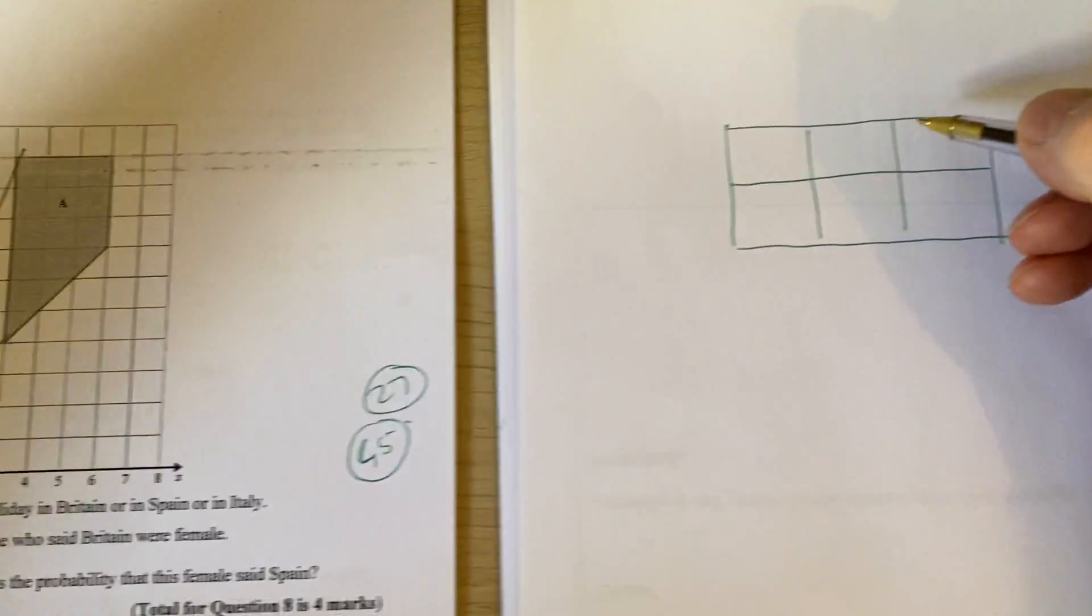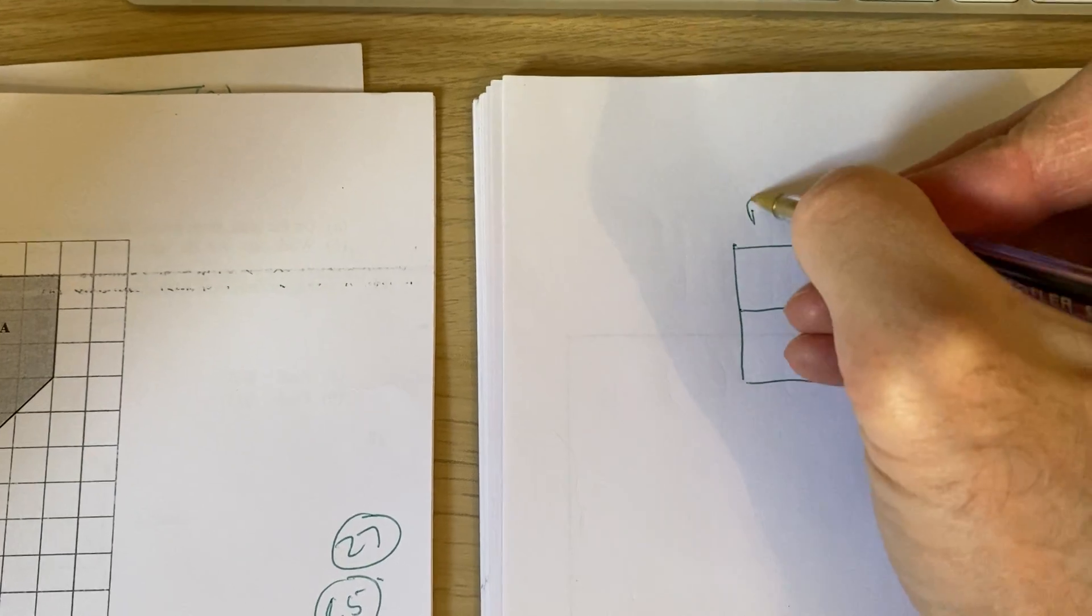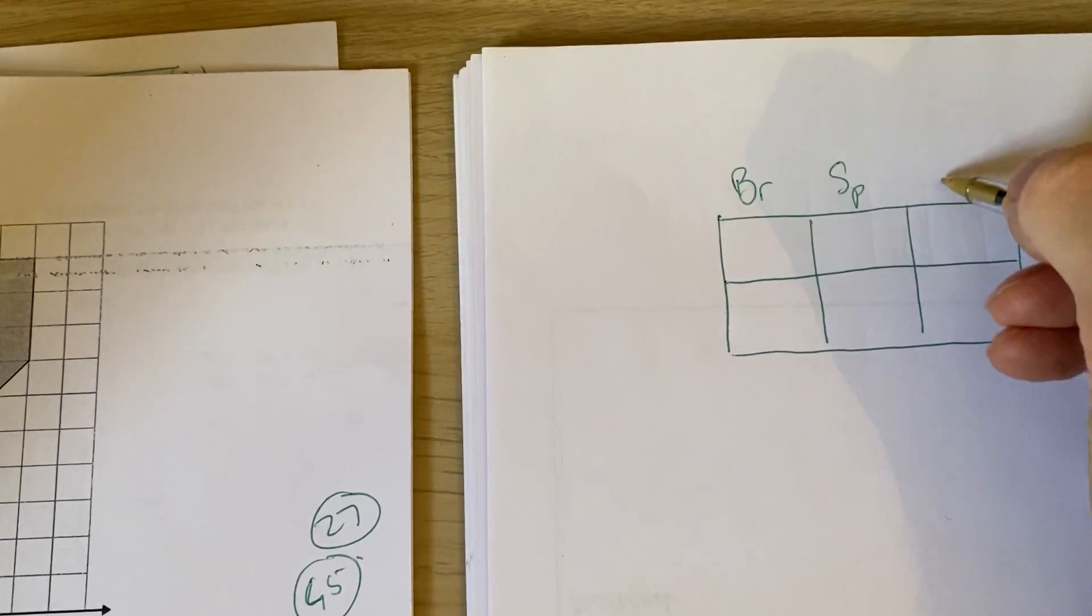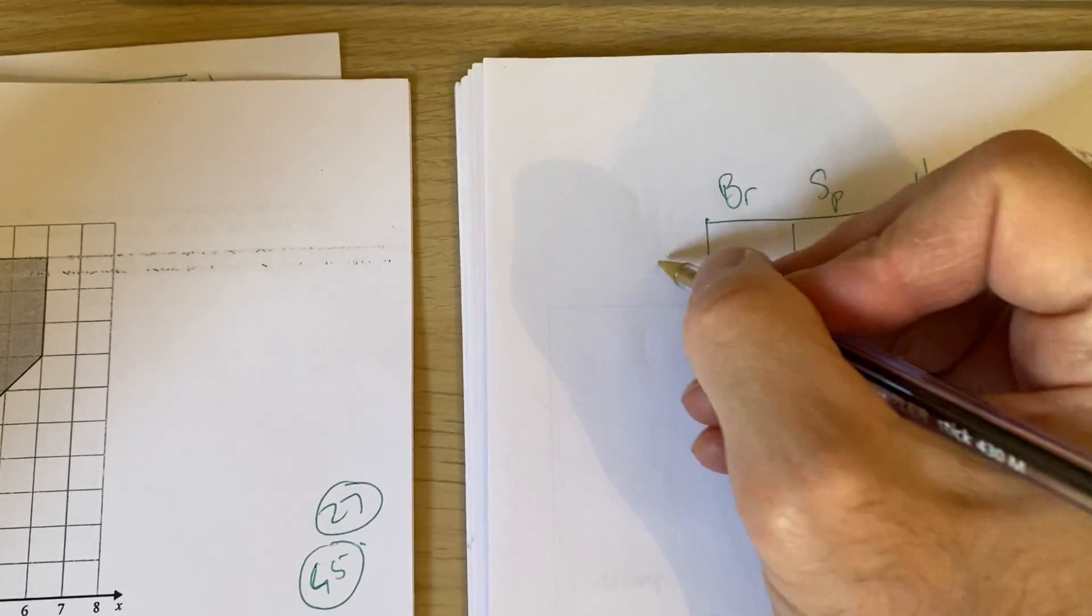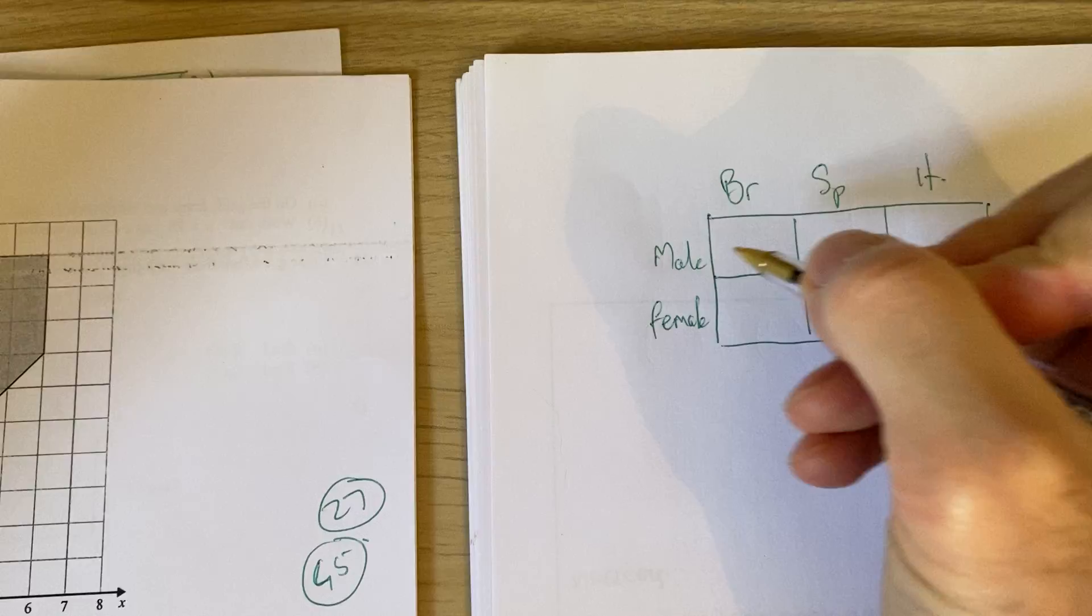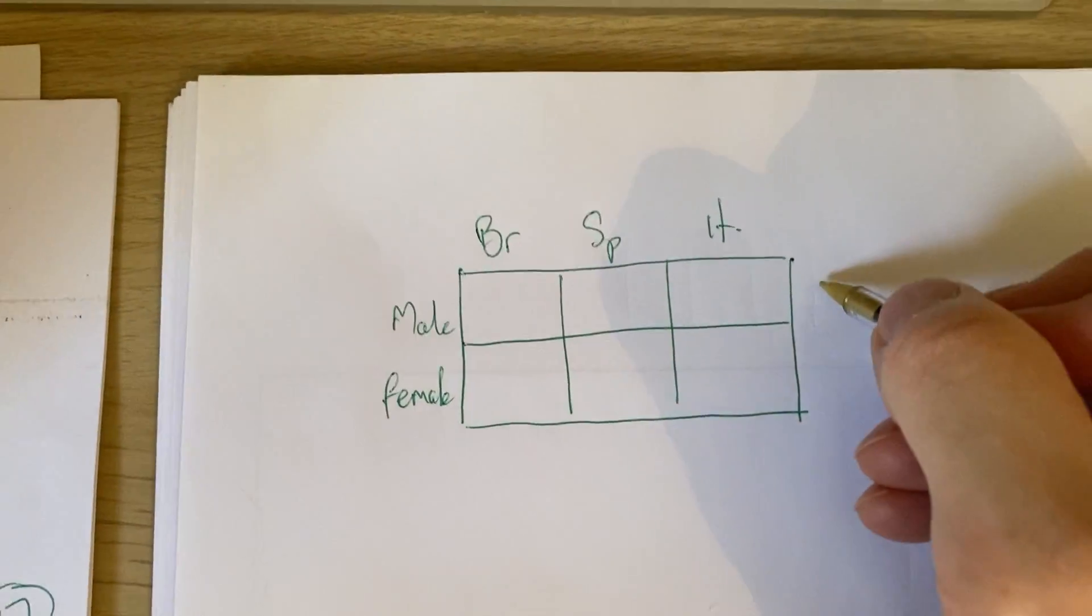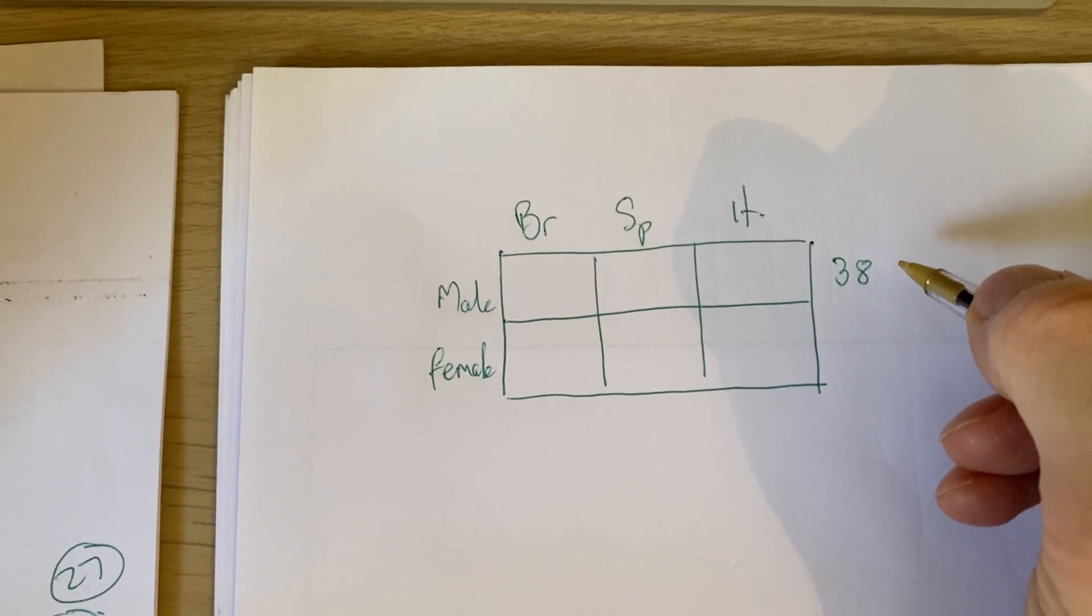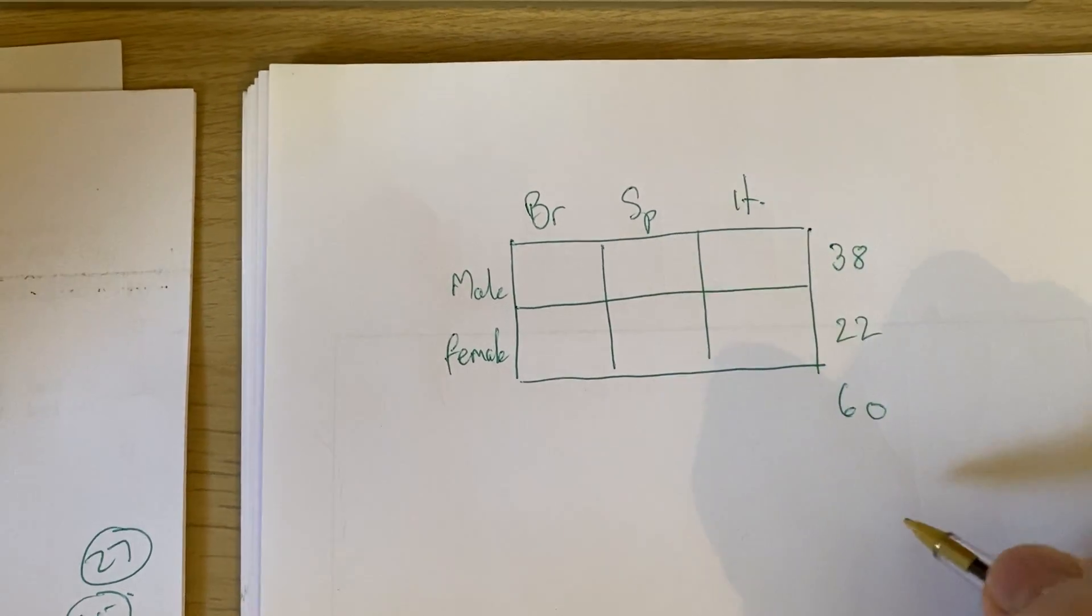So we've got three options here and it can be Britain, Spain or Italy. And they're saying that you've got male and female. And what they're saying here, 38 were male. So that means 38 goes there. That's 60 people overall. So I can see that 22 must be female.